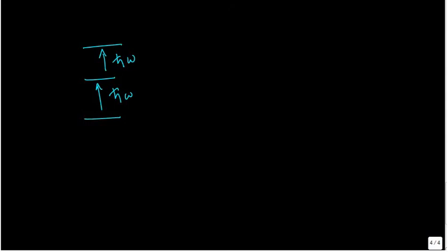In the case of rigid rotor, what you have is the energy levels. So if I write in units of h cross square by 2i, then the first energy level is 0, then 2, then l into l plus one.